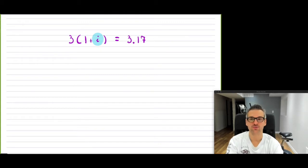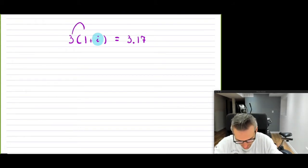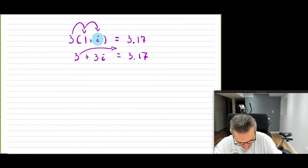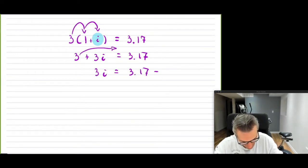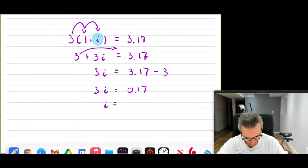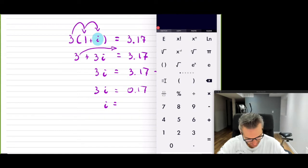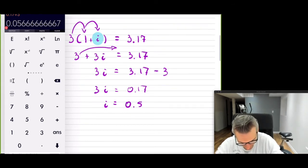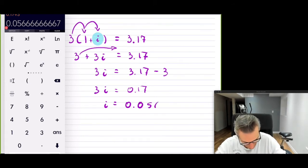We can certainly solve this equation — it's just a linear equation with one unknown. So let me do that now. Getting rid of the brackets: three plus three i equals 3.17. Now I can isolate for i — I'll bring this over to the other side: 3.17 minus 3 gives 0.17, so 3i equals 0.17. Dividing both sides by three, I get my answer: 0.17 divided by 3 equals 0.0566666.